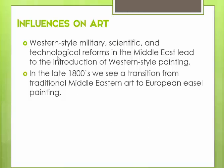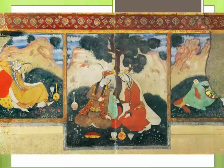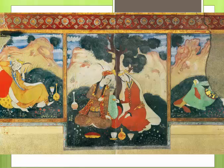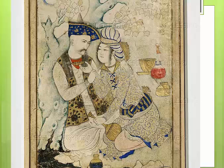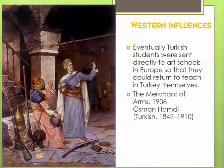We see that Western-style military, scientific, and technological reforms in the Middle East also led to the introduction of Western-style painting. Up until this point, Middle Eastern artists had really held to their traditional styles. Even though Europe during the Renaissance saw painters developing perspective and trying to capture more realism, Middle Eastern painters stayed true to their traditional styles. Although aware of the developments in Europe, they maintained steadfast in their own styles. But by the 1800s, and especially the late 1800s, this was no longer the case. We see many Middle Eastern artists adopting Western styles, even traveling to France and other countries to learn from European master painters.